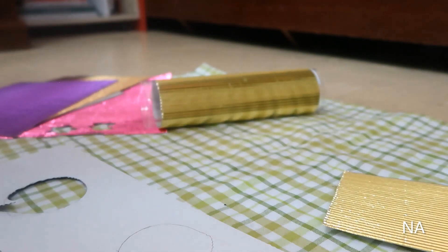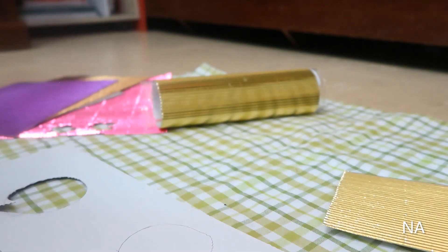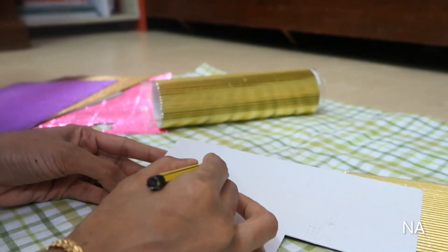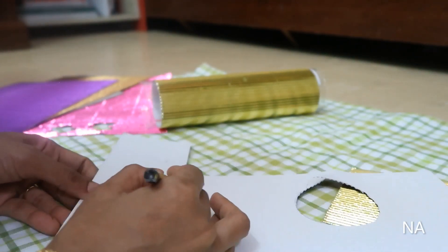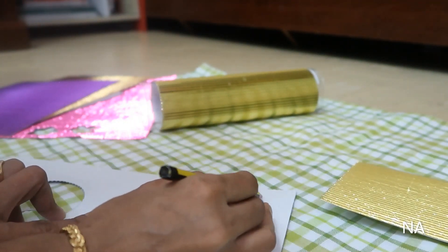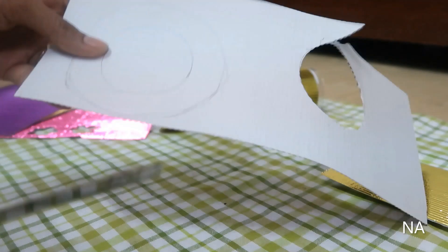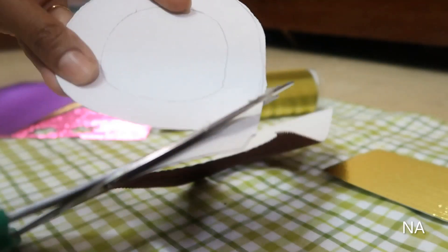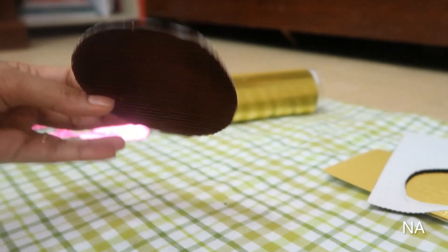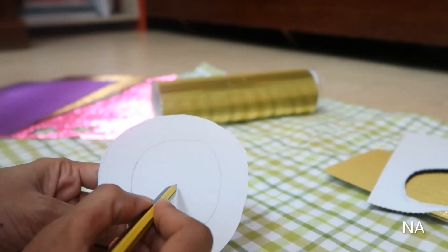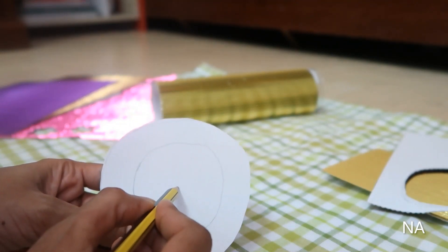Next draw a rough outer circle to it and cut out.